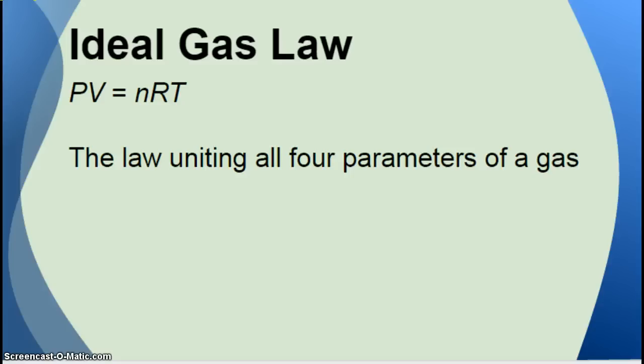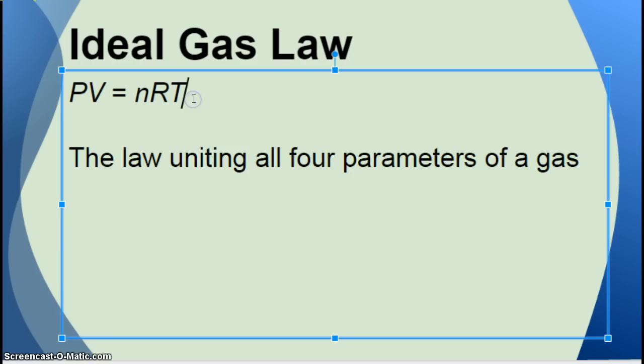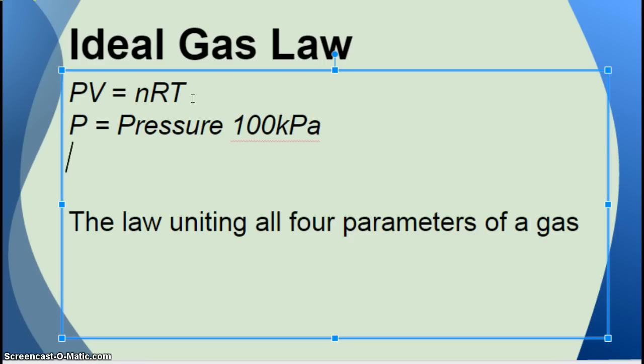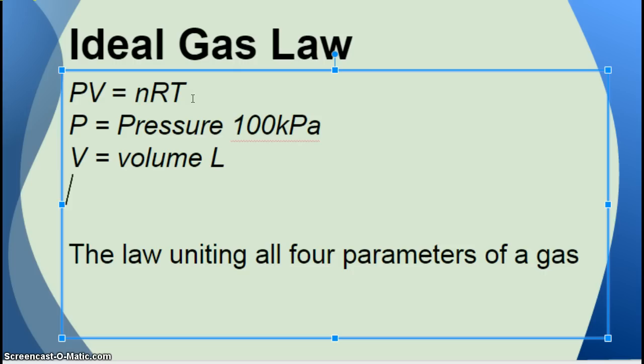And so, of course, the ideal gas law has a mathematical equation. And this is the law uniting all four parameters of a gas. So P. P stands for what? Pressure. And what's the unit? So I have 100, what? Kilopascals of pressure at ATP. Volume is for V. And what's the unit for volume? Liters. N. N we haven't done yet. N is the number of moles. So they could not do M for moles because there are so many M's in science. They're already used up. And so they did N for the number of moles.